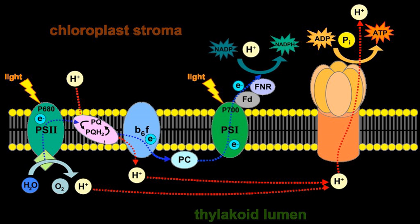Plastoquinone, in turn, transfers electrons to cytochrome B6F, which feeds them into PSI.